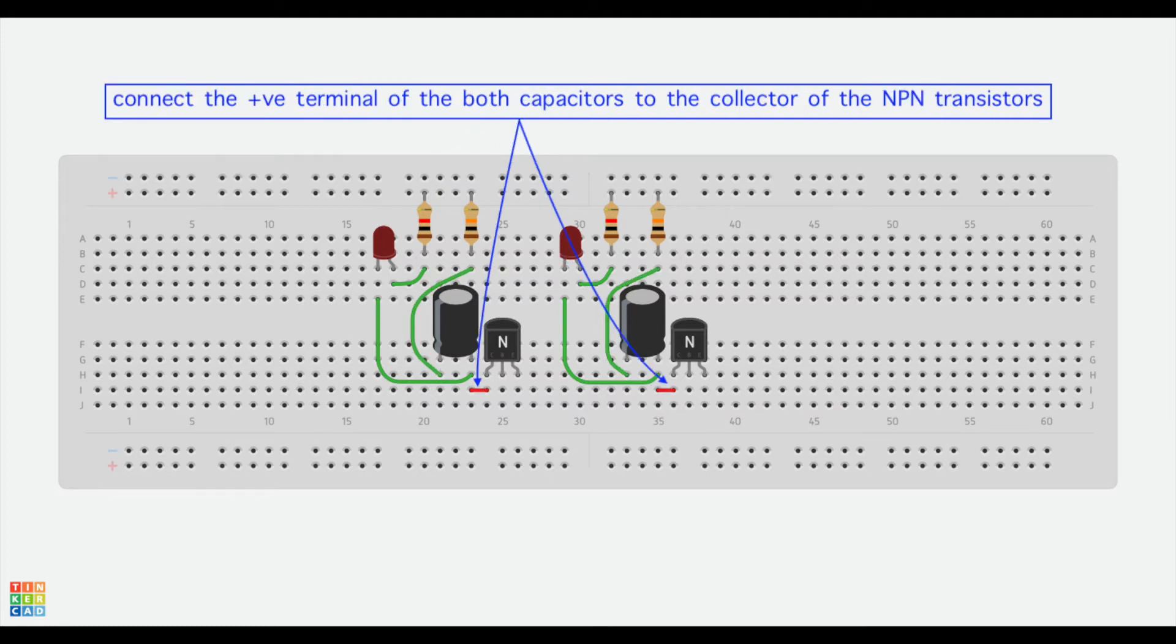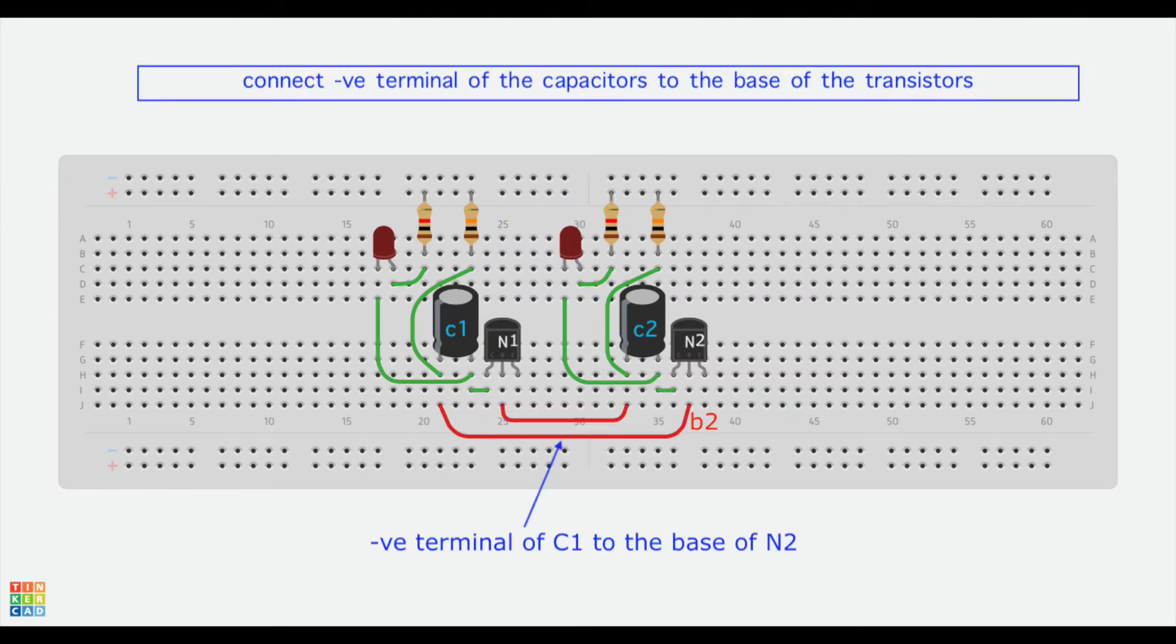Now connect the positive terminal of the capacitor to the collector of the NPN transistors. Now connect the negative terminal of the capacitor to the base of the transistor.